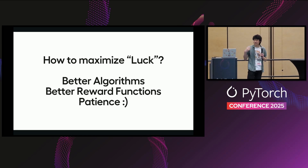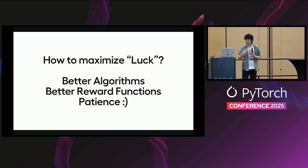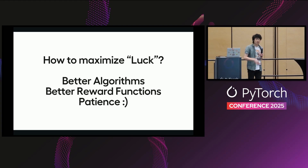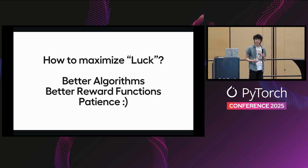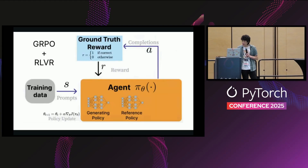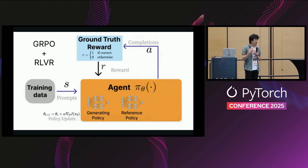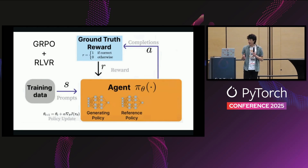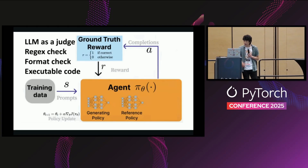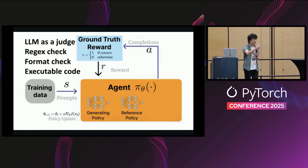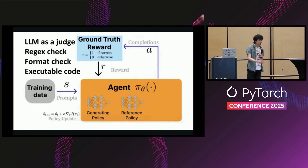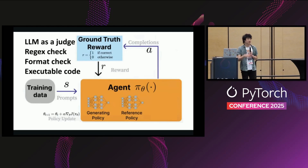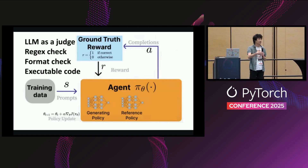How do we actually maximize this luck process and not just wait for years? There are mainly three things: better algorithms, better reward functions, and patience. In terms of algorithms, GRPO was popularized by DeepSeek with reinforcement learning with verifiable rewards. The whole goal is to make PPO — OpenAI's most favorite algorithm — much more efficient by deleting components of the model, saving memory usage and making the process faster. Most large model labs also want things like LLM as a judge to judge model output, regular expression checking, format checking, and code execution to check if code is correct.